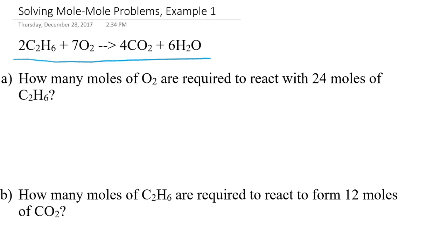And so as we've been practicing pretty much from the very beginning of the year, basically I'm going to set up a dimensional analysis set of conversion factors. So I'm going to start with the given information. I have 24 moles of the ethane. And I want to convert from the moles of ethane to moles of oxygen. And so to construct this conversion factor that's going to take me from moles of ethane to moles of oxygen, I'm going to consult the balanced chemical equation.